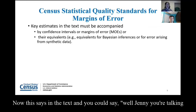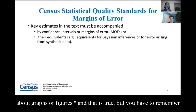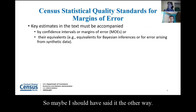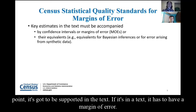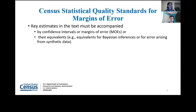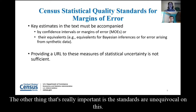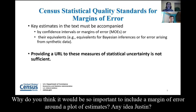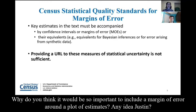This says 'in the text,' and you could say, well, you're talking about graphs or figures. But whatever you're saying in the text is going to have to be supported by the graph or figure if you happen to put that figure in there. If you have a figure and you're going to use that to make a point, it's got to be supported in the text. If it's in the text, it has to have a margin of error. The standards are also unequivocal: you can't just say all of these estimates are point estimates — check out this URL to get your measures of statistical uncertainty. That's not sufficient. If you're telling a story, you have to tell the complete story. Why do you think it would be so important to include a margin of error around a plot of estimates?